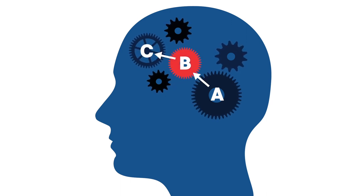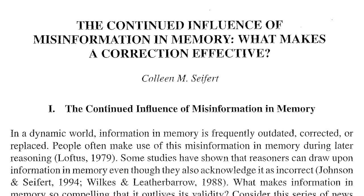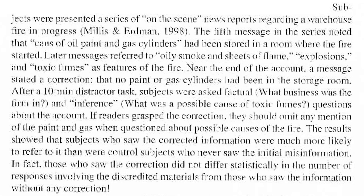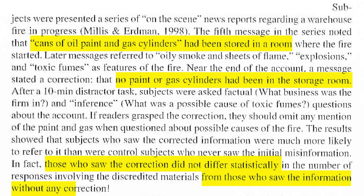But what happens when you learn that B is wrong? In 2002, Colin Seifert tested what happened when people read misinformation about a warehouse fire followed by a retraction. At first, people were told the fire was started by some paint and gas cylinders in the room where the fire started. Some participants were later given a retraction clarifying the room had no paint or gas cylinders. Other participants didn't receive a retraction. The researchers found the retraction didn't have much effect on removing the misinformation. People who read the correction believed that paint and gas started the fire just as much as people who never got the correction.